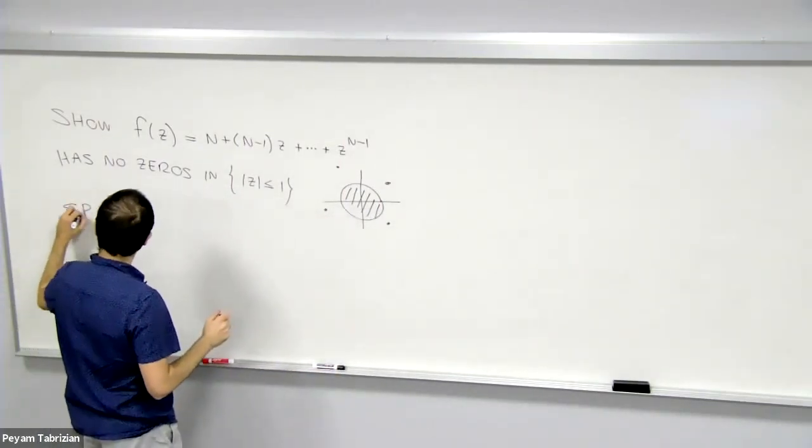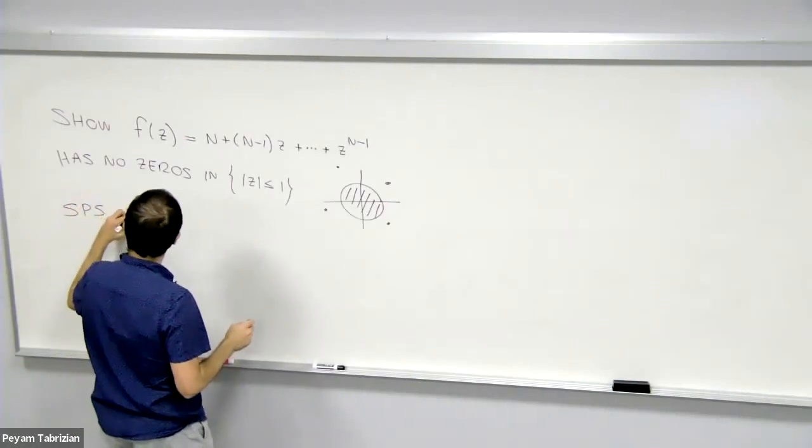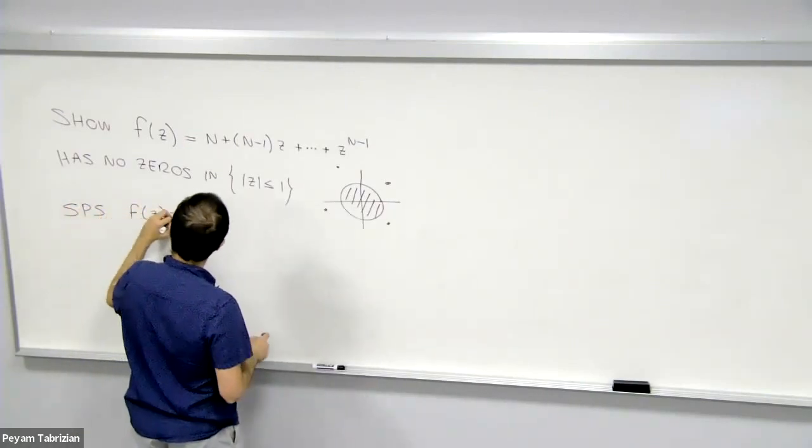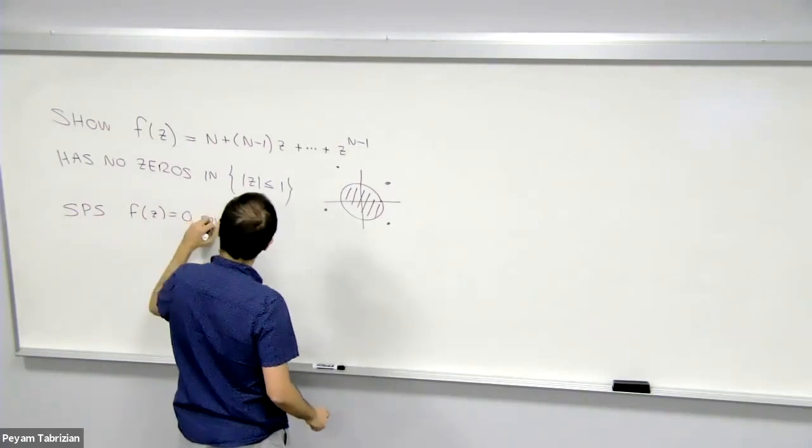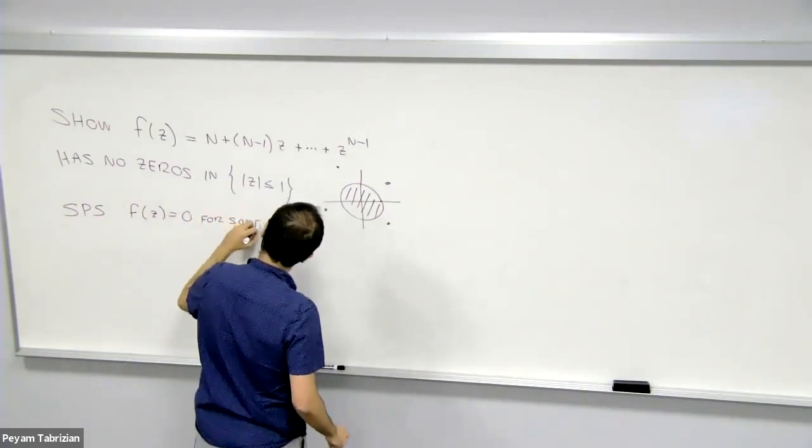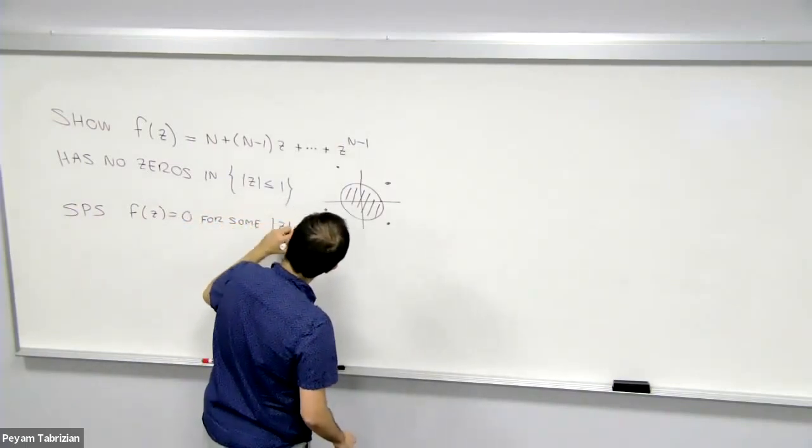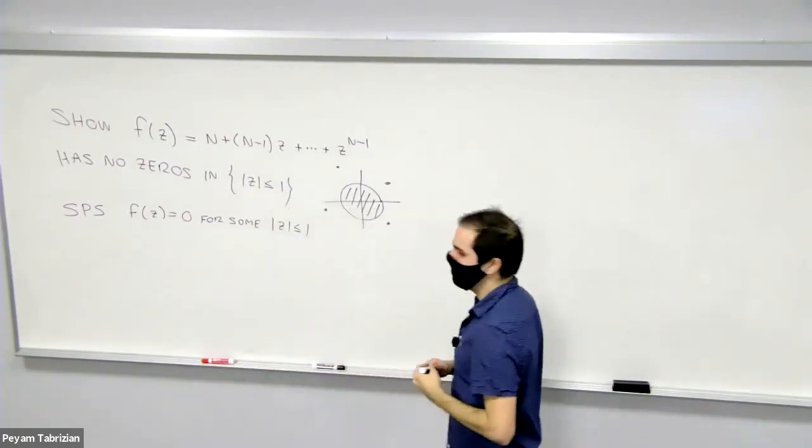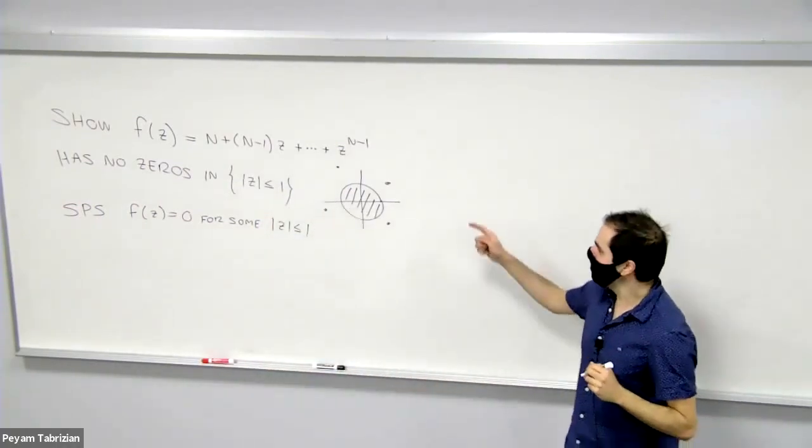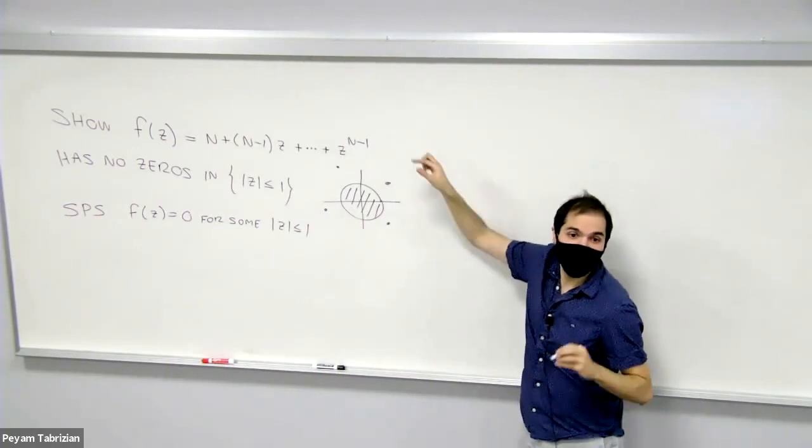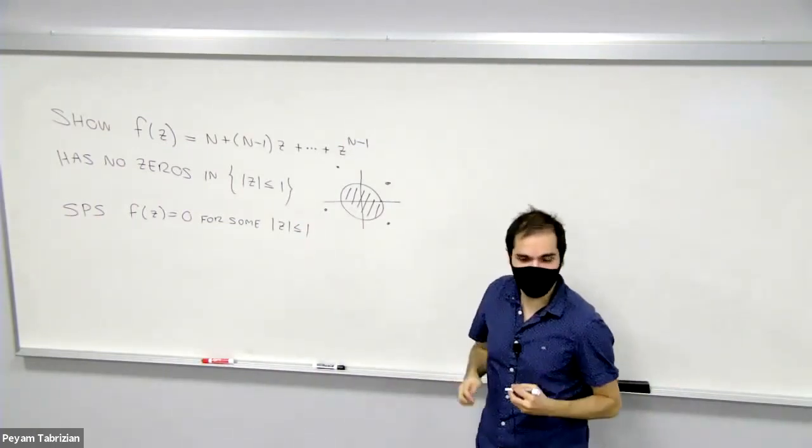So first of all, it's a contradiction. So suppose f(z) = 0 for some z whose absolute value is less than or equal to 1. And as I said, it's quite a clever trick because what we would like to do, we would like to multiply f by a certain factor.